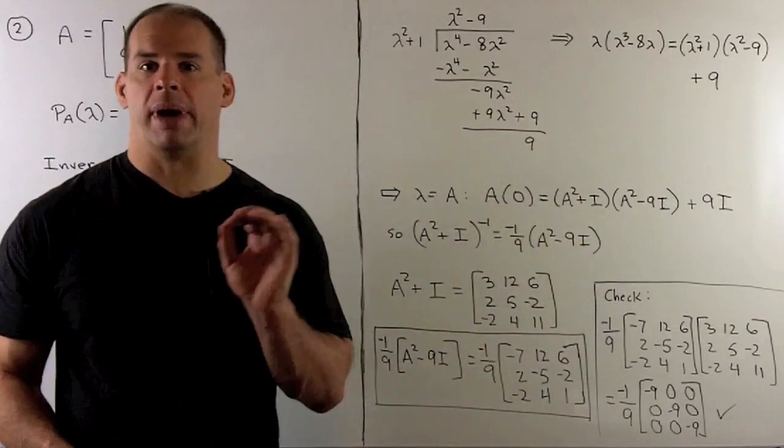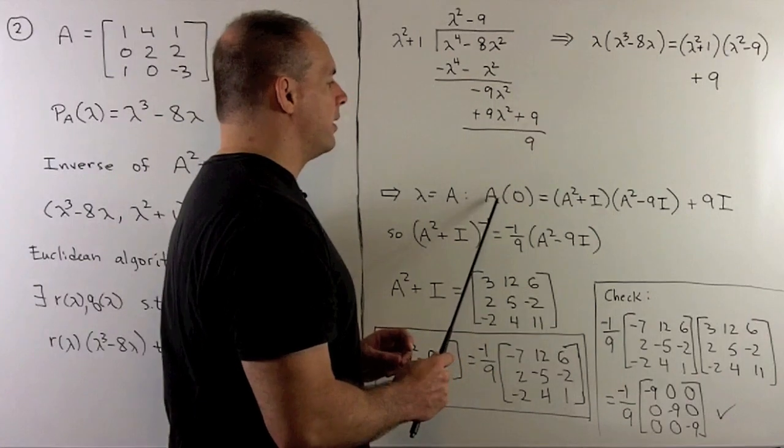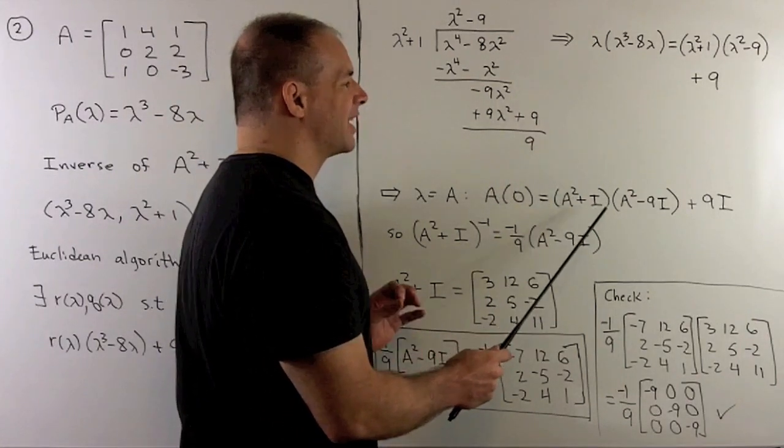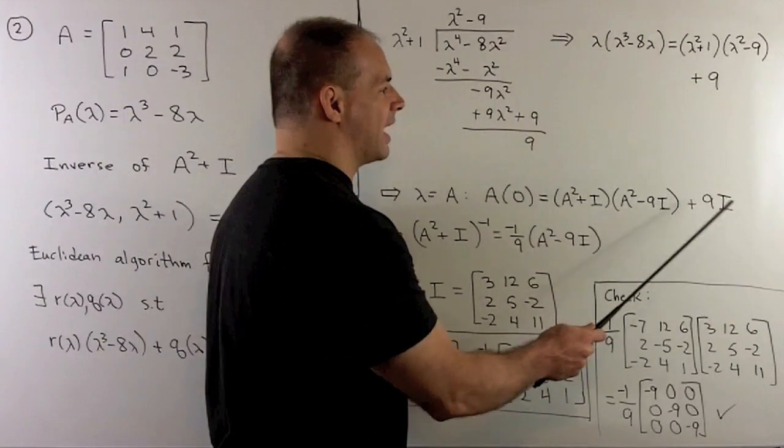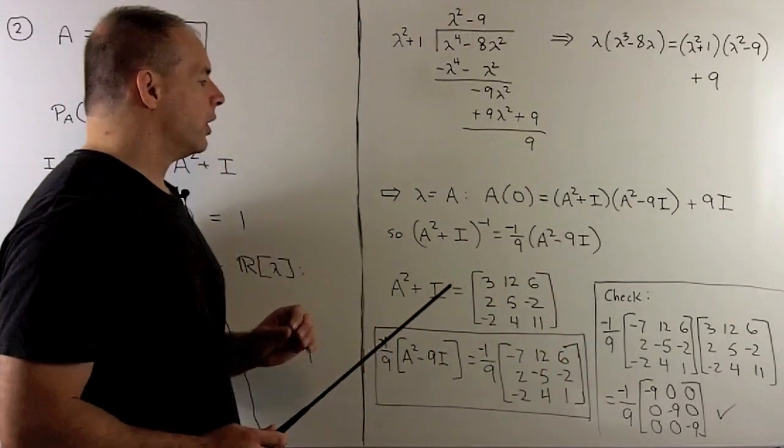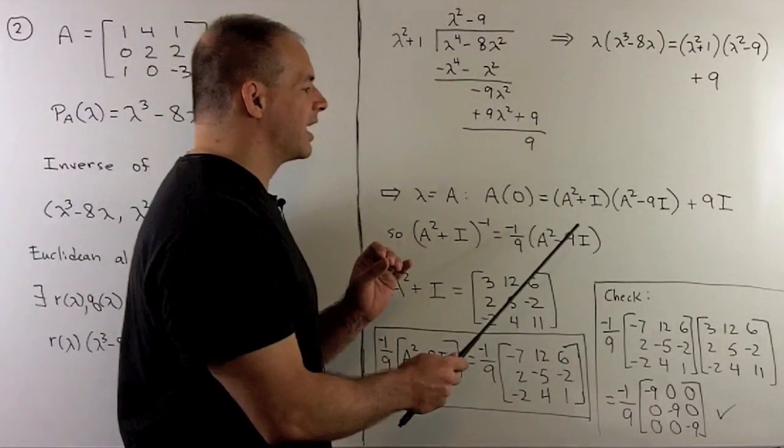We convert to a matrix equation. So, this term will go to zero, and that'll be equal to A squared plus the identity matrix times A squared minus 9 identity matrix plus 9 times the identity matrix. So, our inverse is going to be minus one-ninth A squared minus 9I.